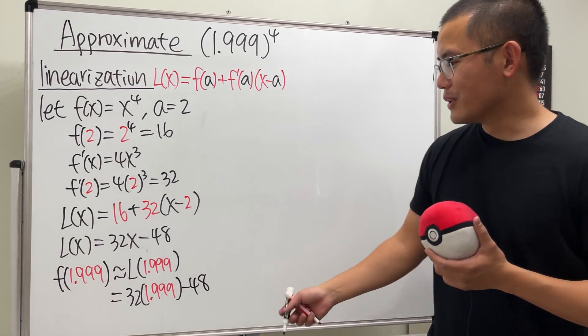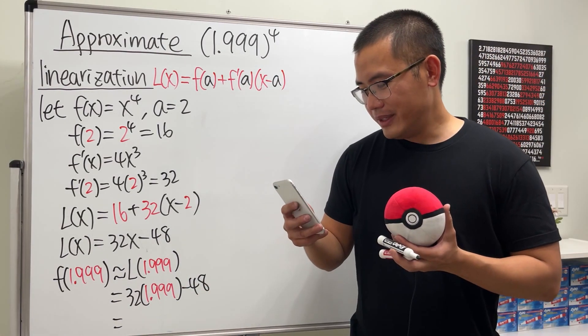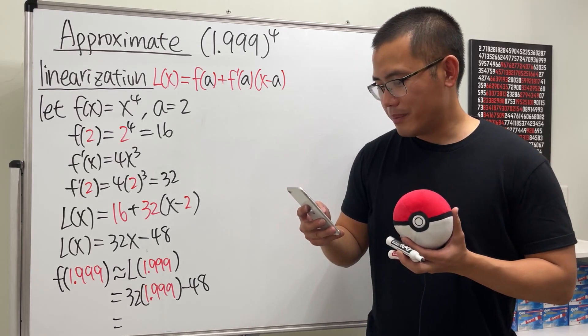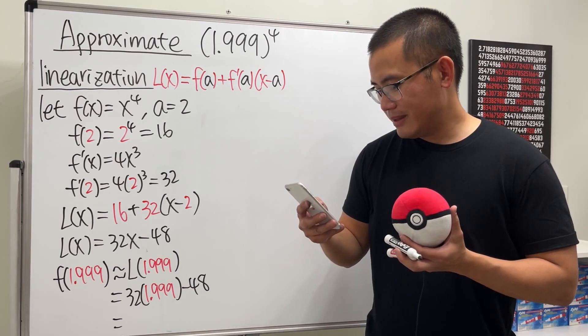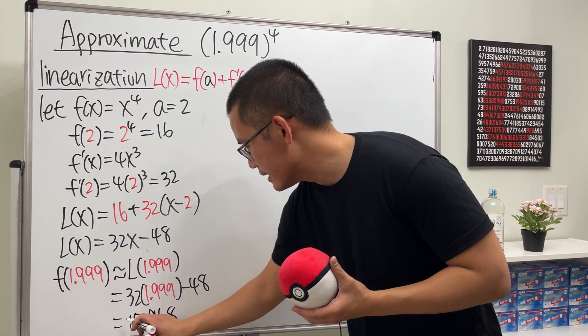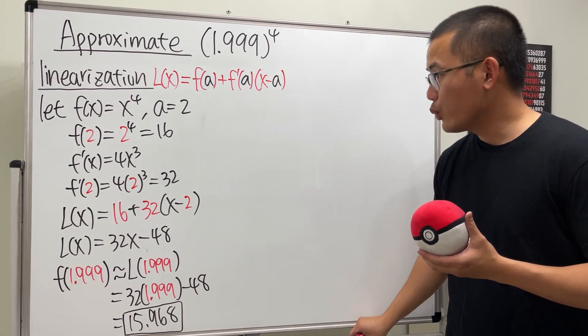We have 32 times 1.999, and then we minus 48. We just have to compute this, and I cannot do this in my head, so in this case you might like the differential way better. We will see: 15.968. So this will be the approximation for that.